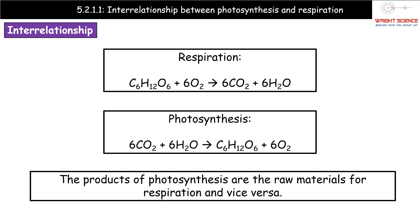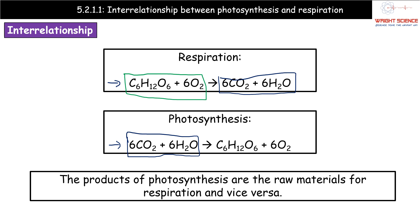Now, delving into the interrelationship between respiration and photosynthesis: the balanced symbol equation for respiration shows carbon dioxide and water (6CO₂ + 6H₂O) as products, and for photosynthesis those same molecules — 6CO₂ and 6H₂O — are the raw materials. Likewise, the reactants of respiration (C₆H₁₂O₆ + 6O₂) are exactly the products of photosynthesis. So the products of photosynthesis are the raw materials for respiration, and the products of respiration are the raw materials for photosynthesis.